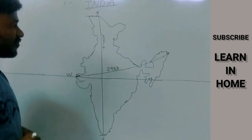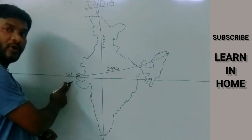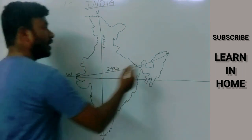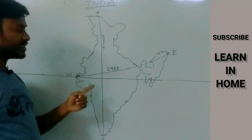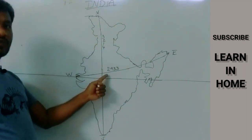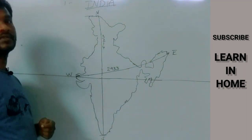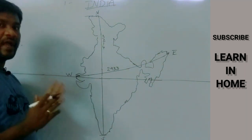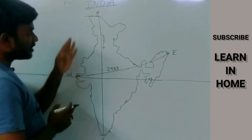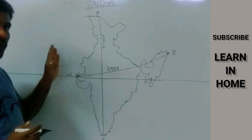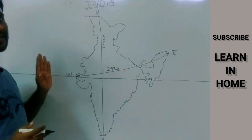In the same way, if you observe from the extreme western point of India to the eastern point of India, the distance is 2,933 kilometers.